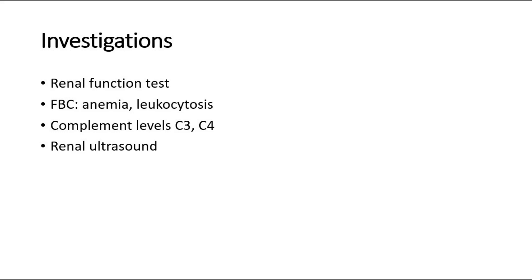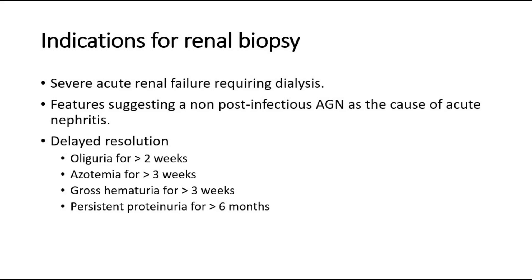Renal biopsy is not commonly done, but there are indications for it: if the patient has severe acute renal failure requiring dialysis, or has features suggesting a non-post-infectious acute glomerulonephritis, or there is delayed resolution of symptoms or signs — such as oliguria persisting more than 2 weeks, azotemia more than 3 weeks, gross hematuria more than 3 weeks, or persistent proteinuria for more than 6 months. These indications warrant a renal biopsy to rule out other differential causes.